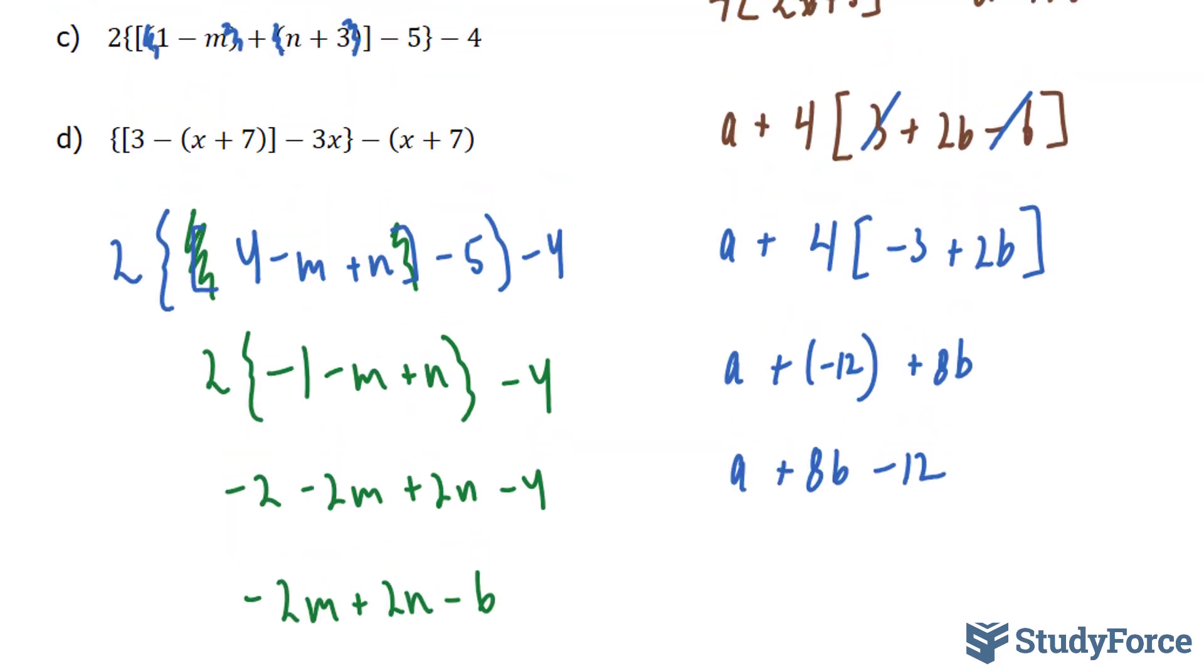For question D, the most difficult of them all: starting with the parentheses, x + 7 cannot be combined. But if you expand the negative, this becomes -x and this becomes -7. So 3 - 7 is -4.